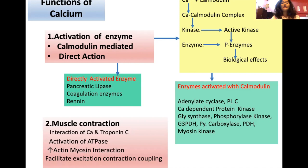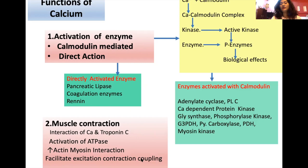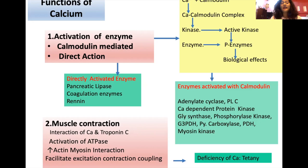The second major action of calcium is muscle contraction. Calcium secreted from the sarcoplasmic reticulum interacts with troponin C, leading to muscle contraction. Myosin kinase, activated by calcium, stimulates ATPase from the myosin chain, increasing actin-myosin interaction. Calcium also facilitates excitation-contraction coupling, enabling proper muscle contraction. In calcium deficiency, neuromuscular irritability occurs, manifesting as tetany.